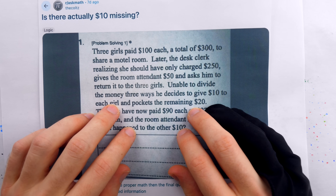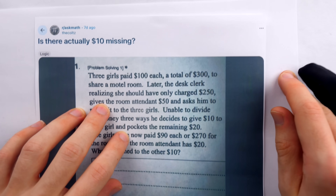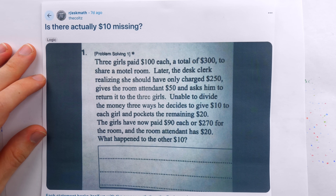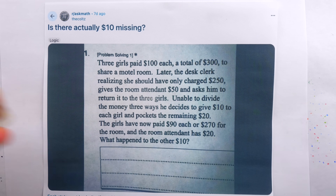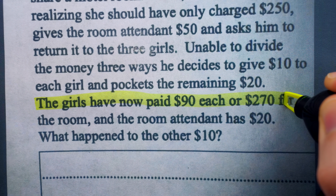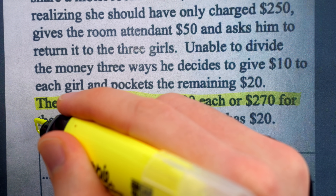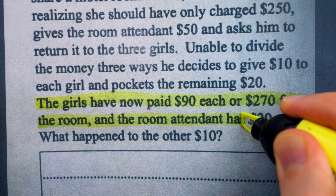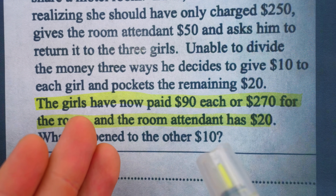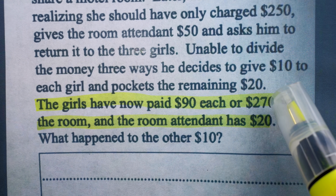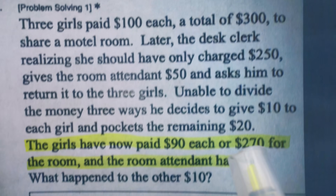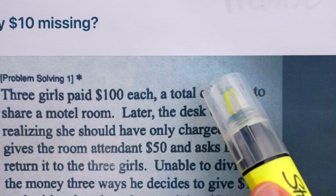The key to the trick here is presenting information that contradicts a hidden premise — a hidden premise which the puzzle writer hopes you'll accept implicitly. The girls have now paid $90 each, or $270 for the room, and the room attendant has $20. This is true, but the hidden premise the writer wants you to accept is that this $270 and $20 together should account for that total of $300.